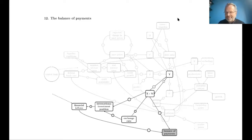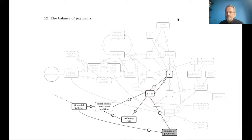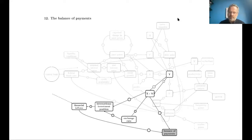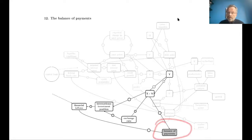Trade flows account for roughly half of our balance of payments. The other half consists of financial flows, which include income payments to and from the rest of the world — profits, interest payments, and so on that cross national borders — as well as financial transactions in the strict sense: purchases and sales of assets, new loans being made, and old loans being paid off. Together these things constitute the balance of payments, which is a central concern for policymakers in much of the world.